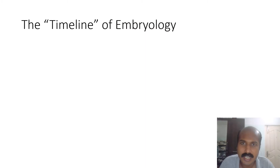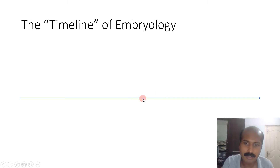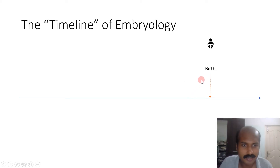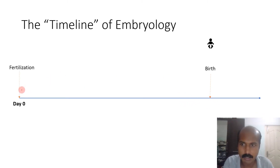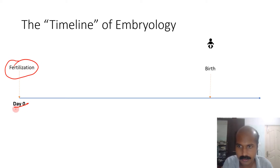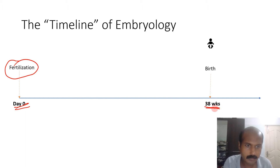Today we are going to learn the timeline of embryology. If we plot the time of our life, we intuitively remember our birthday — the day we were born — and we feel that is when our life began. But actually our life began much earlier. In embryology we are concerned about day zero, when fertilization begins. From day zero till birth is 38 weeks, and this is the duration of intrauterine life.